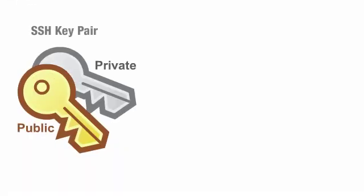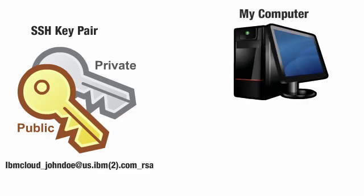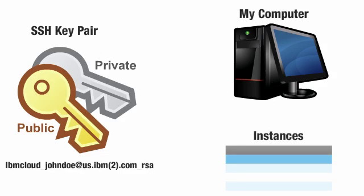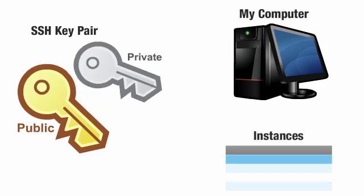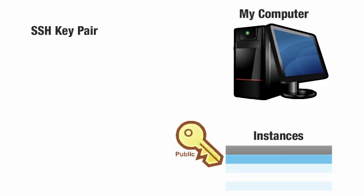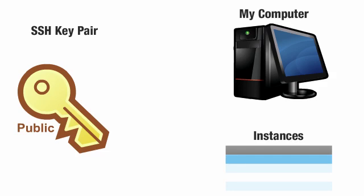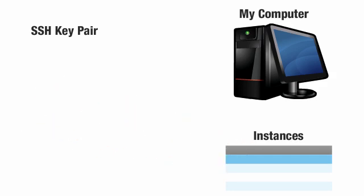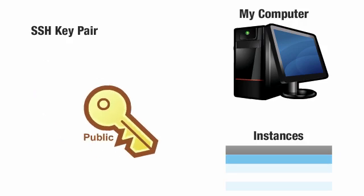Now I'm going to talk about modifying the SSH key pairs. IBM Smart Business Development and Test on the IBM Cloud allows access through a key pair. There is a public key and a private key. I have downloaded our private key in the demo entitled Add an Instance. They are named something such as IBM_Cloud_JohnDoe@us.ibm2.com_RSA. The public keys reside with the instances and are always paired, at key generation time, with a specific private key. In this video, I will show how we can create and manage key pairs outside of the instance wizard.